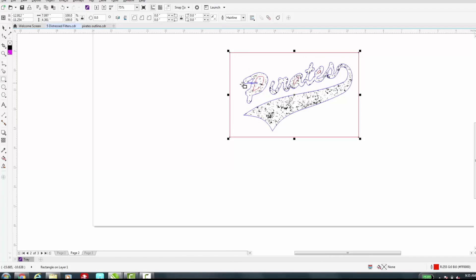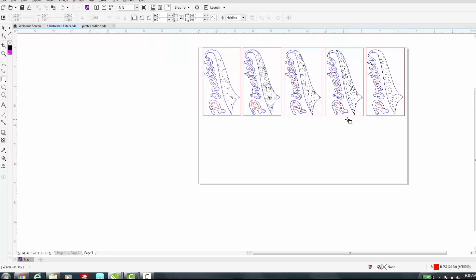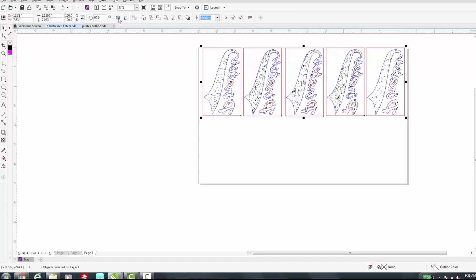Now I've prepared all five of these already on a separate page, so we're ready to send these over to the universal control panel for processing. The last thing I have to do before that is just mirror these objects, because you have to remember anytime you use heat transfer vinyl, you have to mirror before cutting.